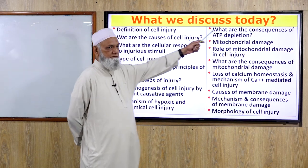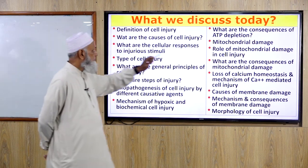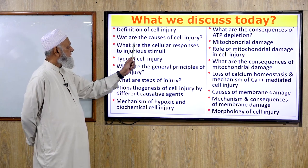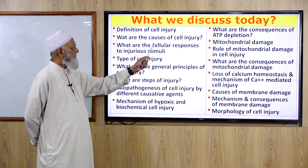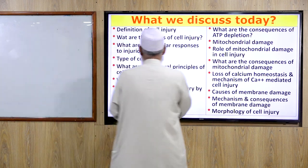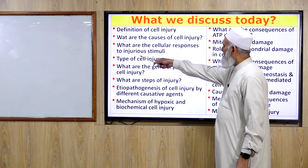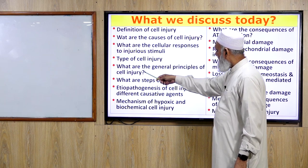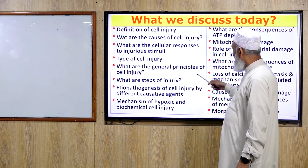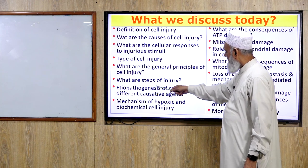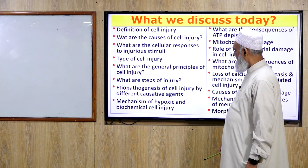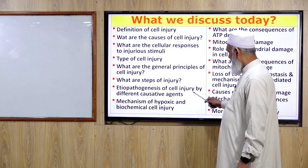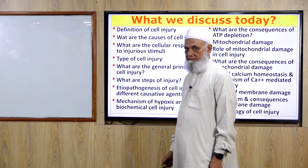What we will discuss today: definition of cell injury, causes of cell injury, cellular response to injurious stimuli, types of cell injury, general principles of cell injury, steps of cell injury, and etiopathogenesis of cell injury by different causative agents.